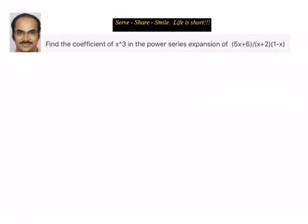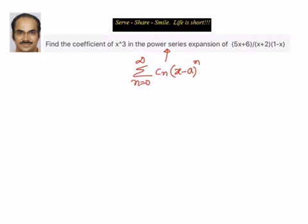Before moving forward, we want to spend a couple of minutes on what is a power series expansion and some simple examples. Any series of the form sum from n equal to 0 to infinity of c_n into x minus a whole to the power n is called a power series. For example: c1 into (x minus a) plus c2 into (x minus a) squared, and so on.